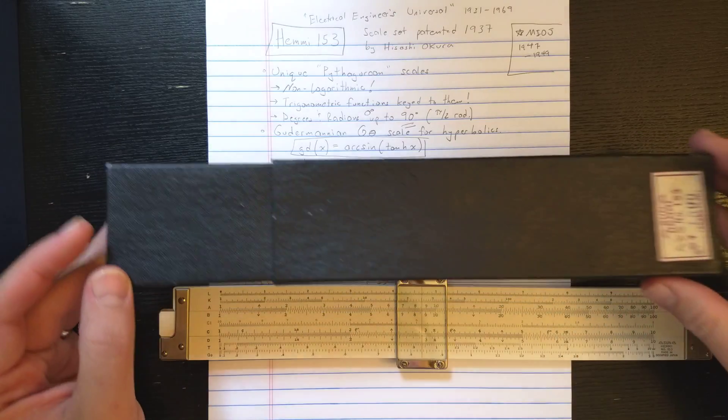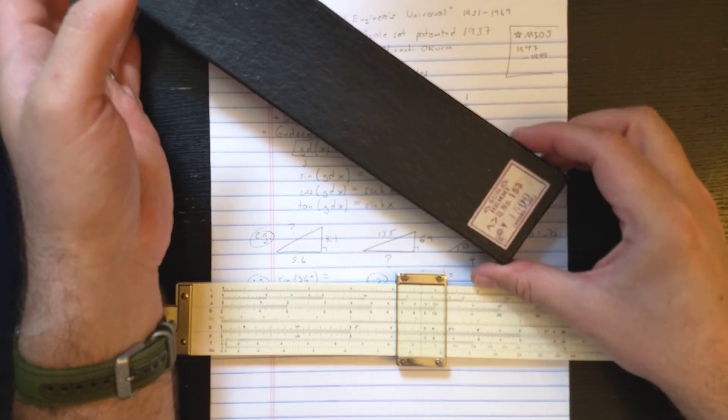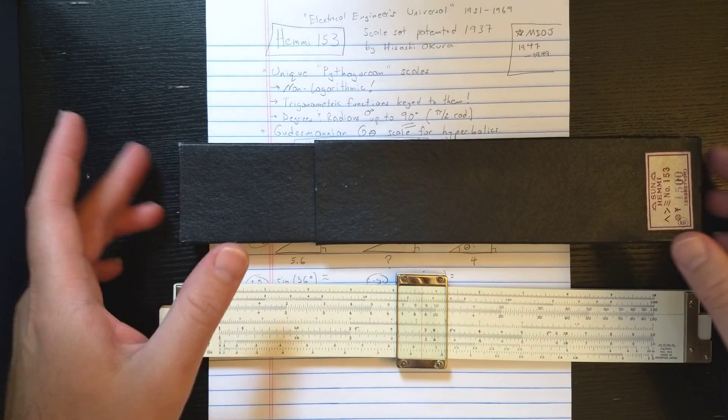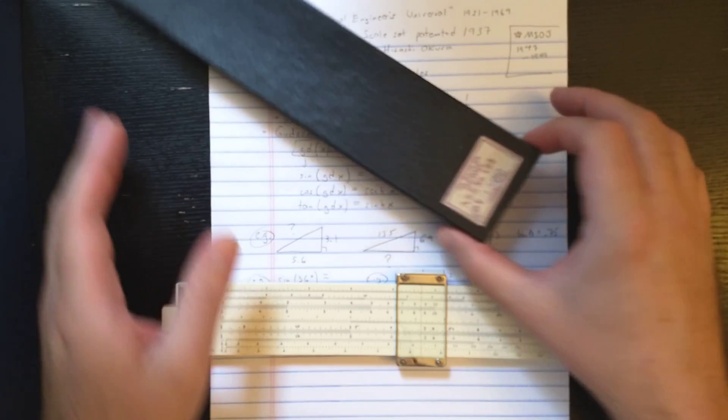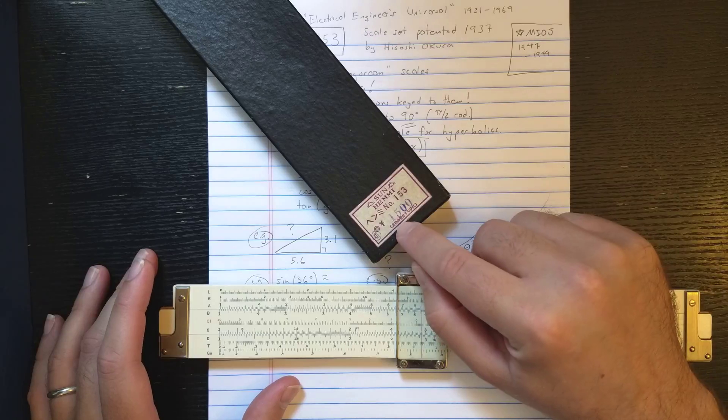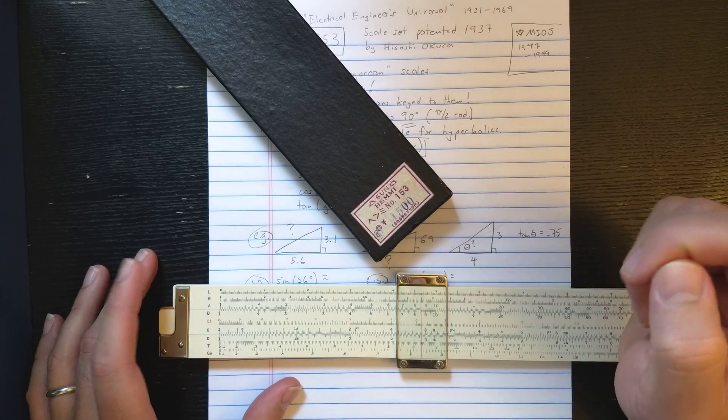If any of you have the other half of the case that this should have, please send it along. I only have half the case without the little top part, but you can see it's the original case. It looks like price here, 1500 yen, I guess.